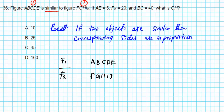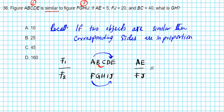Since these two letters fall in the same position in the two figures, they are corresponding. So AE from figure one corresponds with FJ from figure two. We also have BC — second vertex to the third — and GH in the same position on the second geometric figure. So BC and GH are corresponding sides.